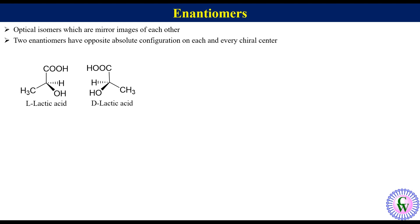So they are optical isomers. We can see here that they are mirror images of each other, so they are enantiomers. There is only one chiral center. L-lactic acid has S configuration while D is R. Thus we can see that the two enantiomers have opposite absolute configurations.